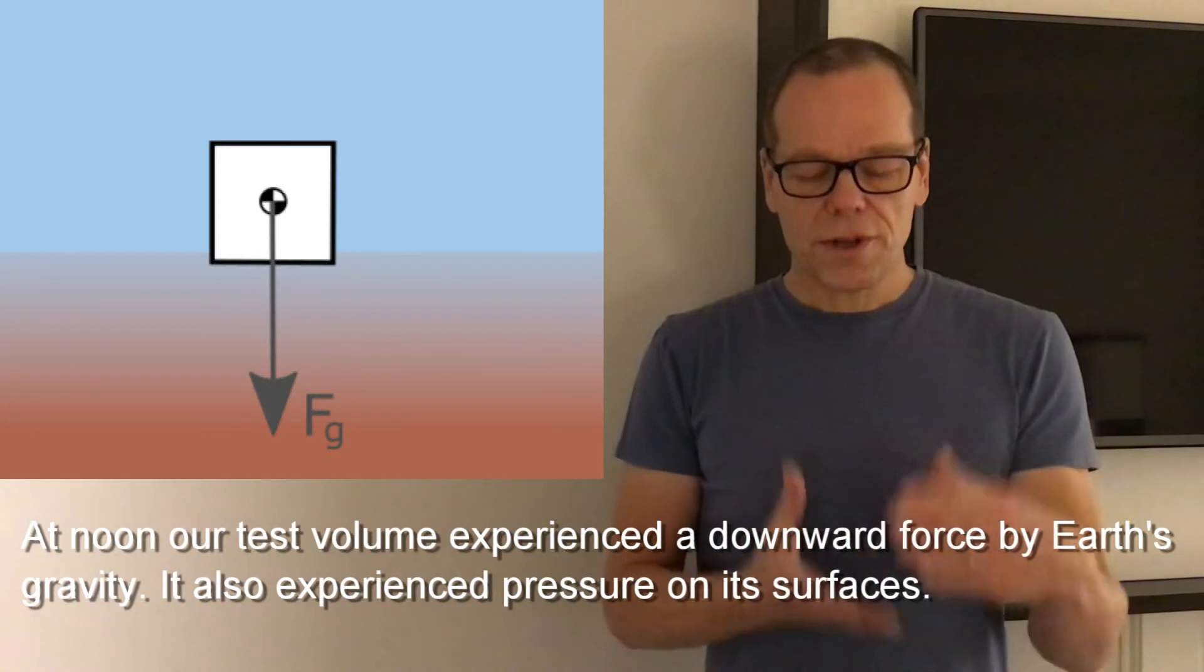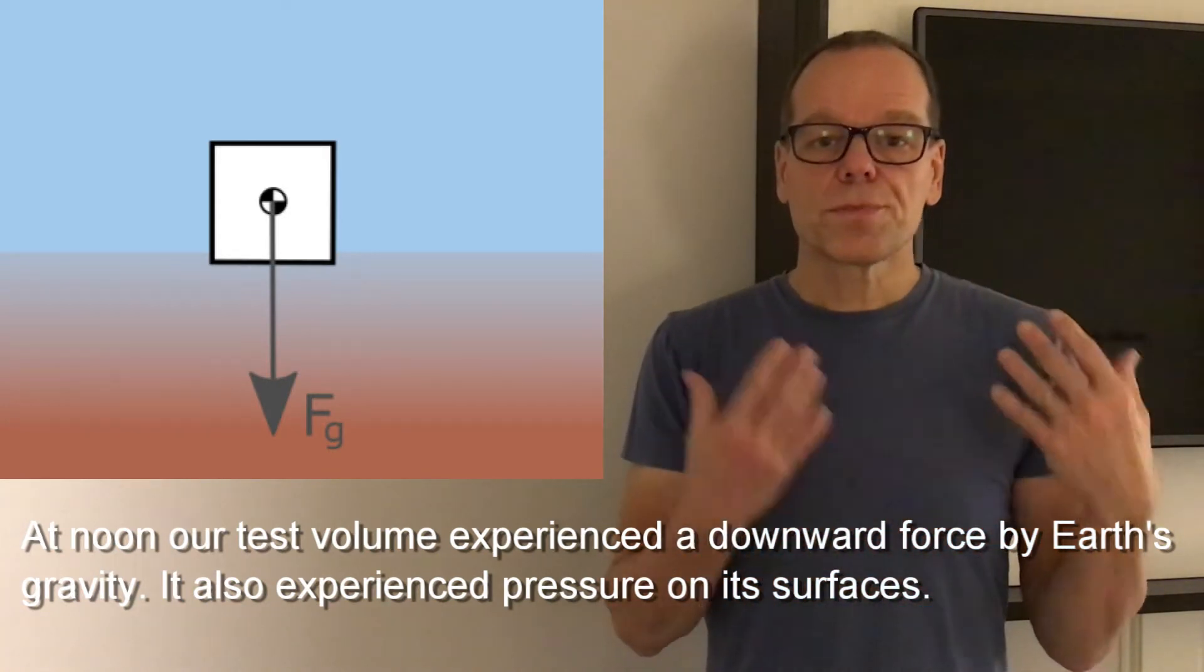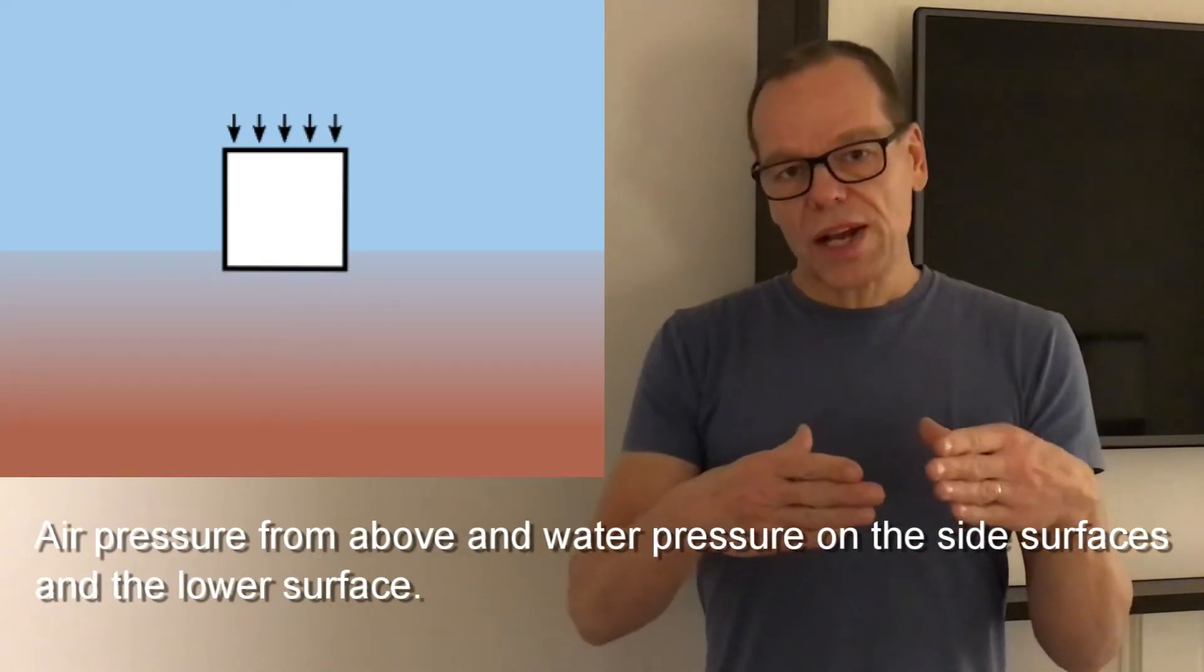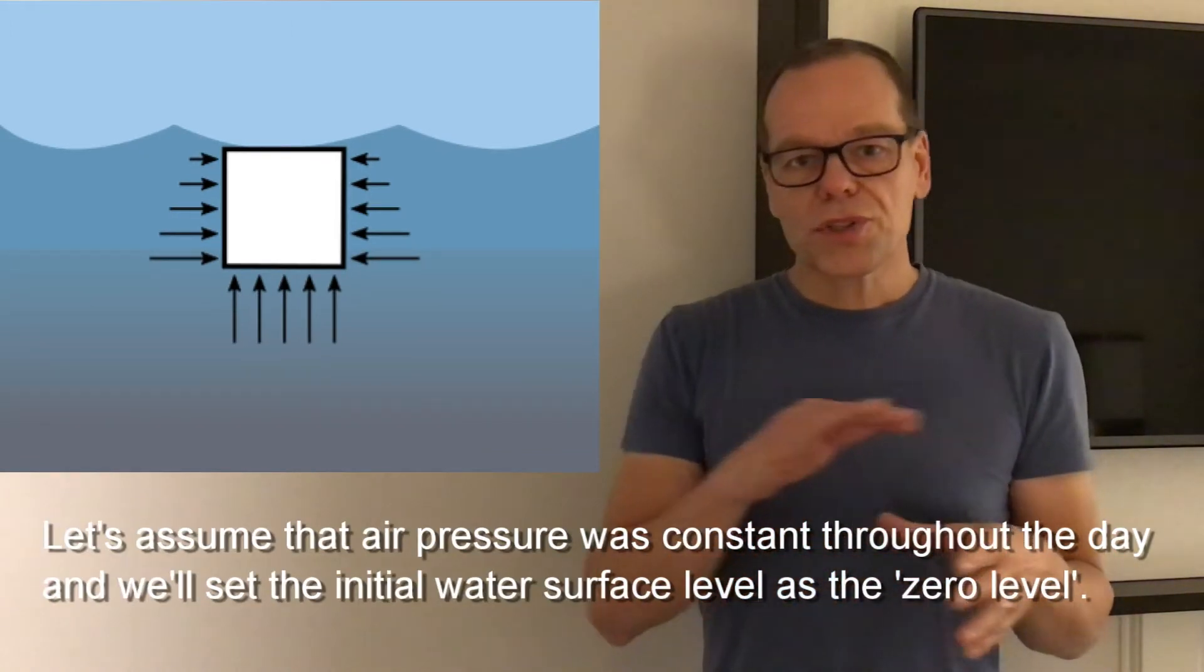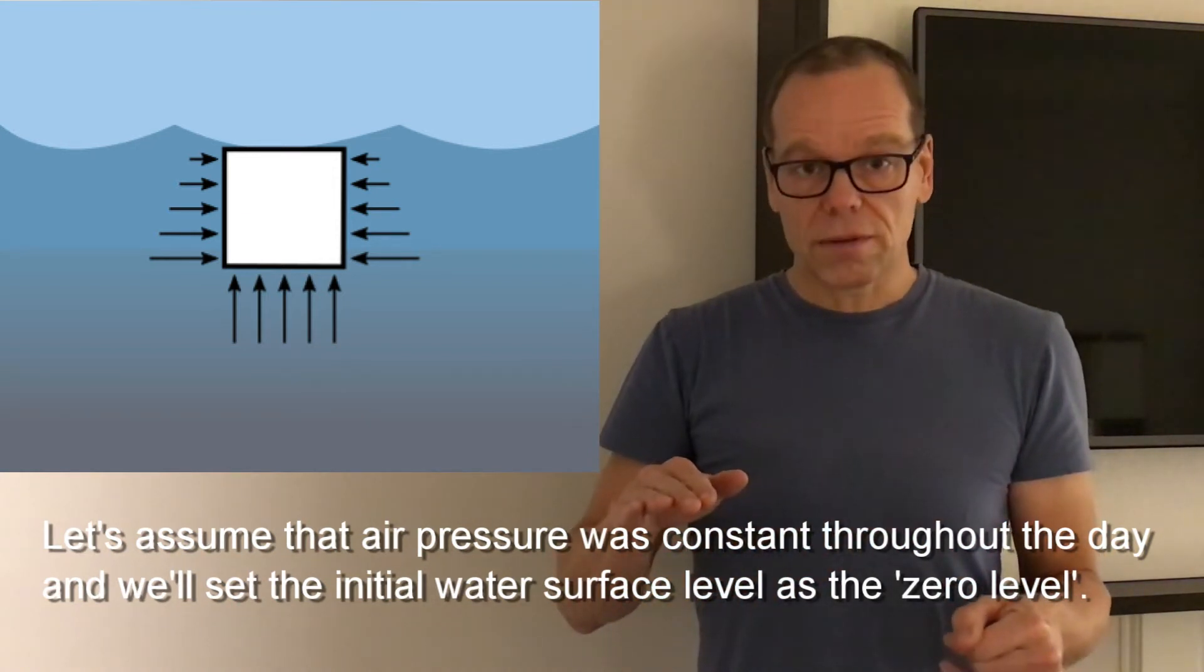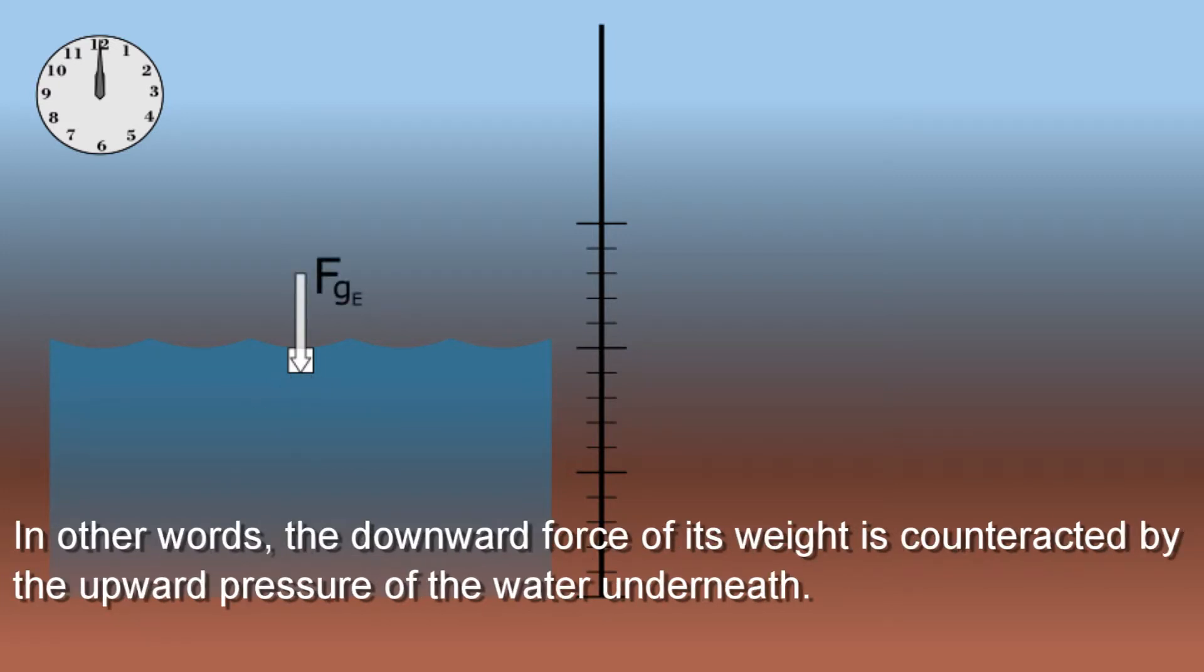At noon, our test volume experienced a downward force by Earth's gravity. It also experienced pressure on its surfaces: air pressure from above and water pressure on the side surfaces and the lower surface. Now let's assume that air pressure was constant throughout the day and we will set the initial water level as the zero level. If at noon the situation is at equilibrium, it means that the water underneath our liter supports the weight of our liter. In other words, the downward force of its weight is counteracted by the upward pressure of the water underneath.